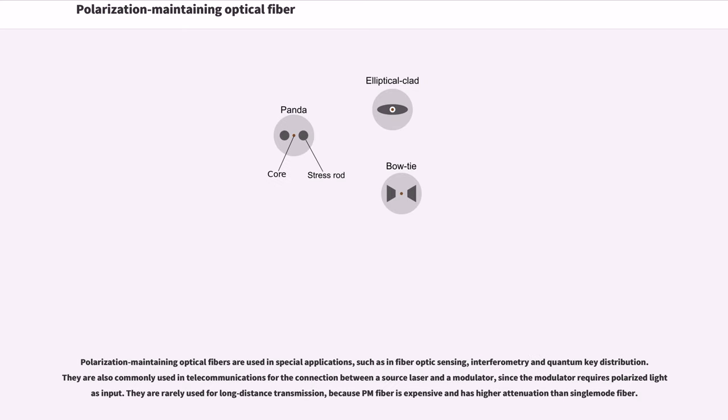Polarization maintaining optical fibers are used in special applications, such as in fiber optic sensing, interferometry and quantum key distribution. They are also commonly used in telecommunications for the connection between a source laser and a modulator, since the modulator requires polarized light as input. They are rarely used for long distance transmission, because PM fiber is expensive and has higher attenuation than single mode fiber.